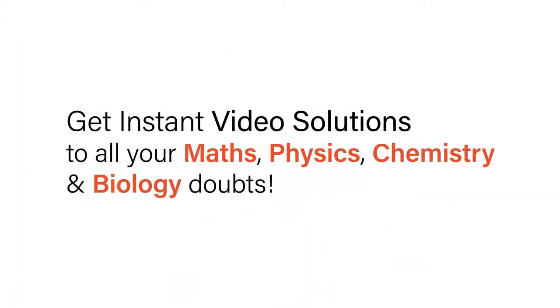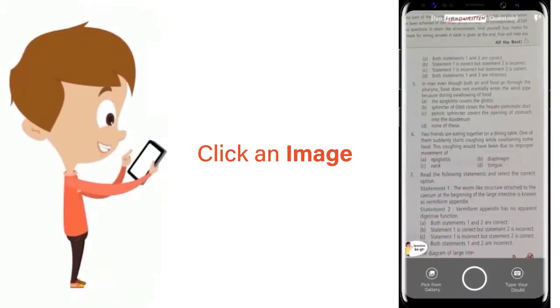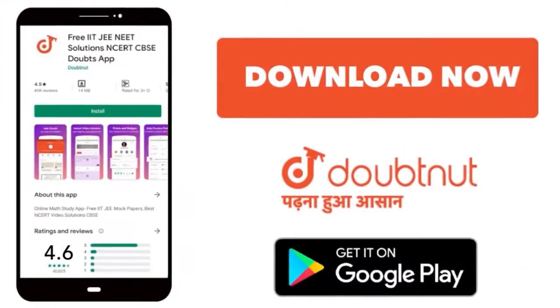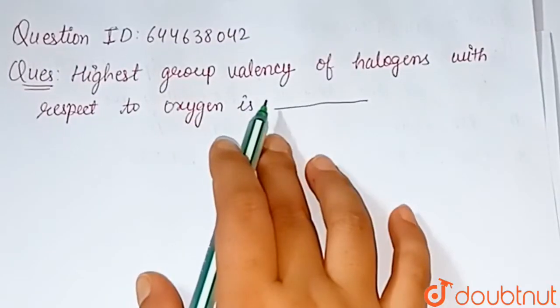With Doubtnut, get instant video solutions to all your math, physics, chemistry and biology doubts. Just click the image of the question, crop the question, and get instant video solution. Download Doubtnut app today. Our question is: highest group valency of halogen with respect to oxygen is...